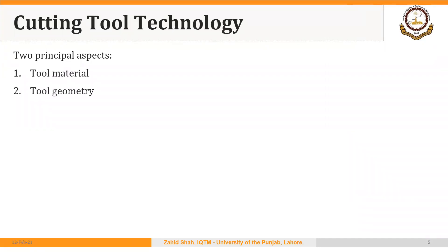There are two principal aspects related to cutting tools in machining: the first is tool material and the second is tool geometry. Now we are talking about tool material; in the subsequent lectures we will focus on tool geometry.